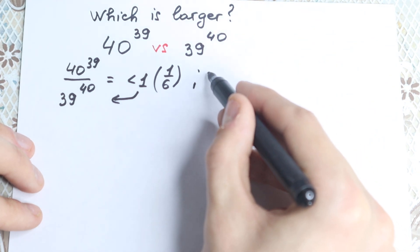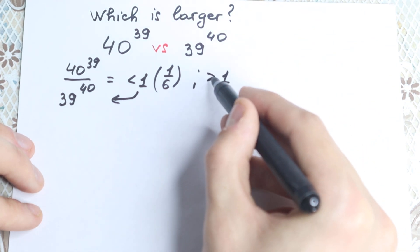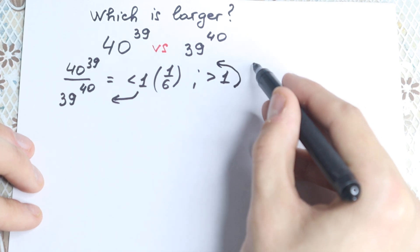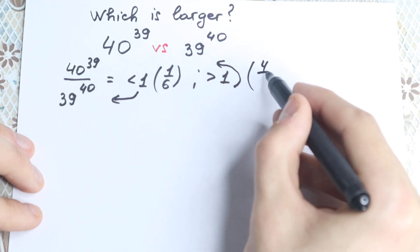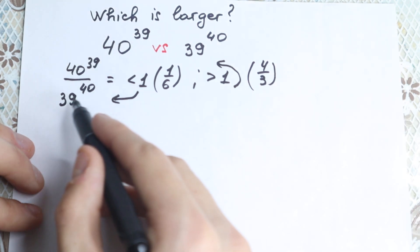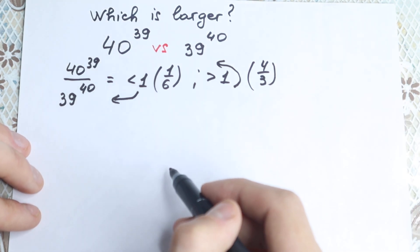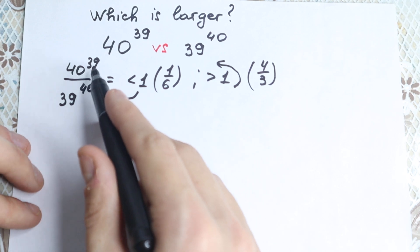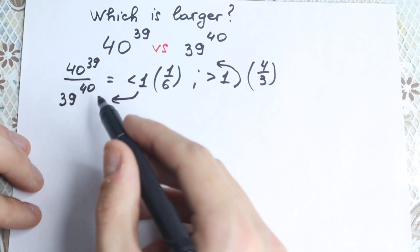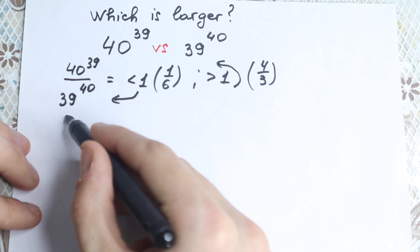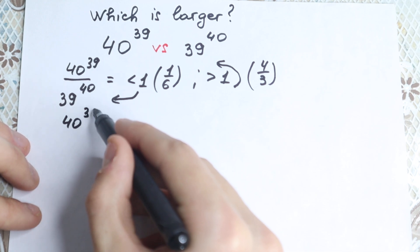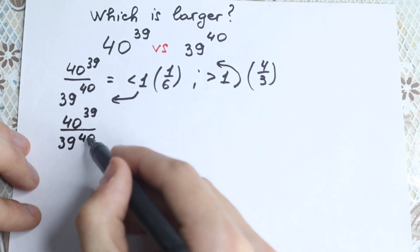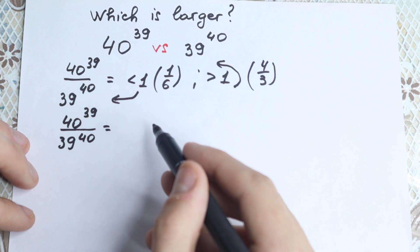But if the answer is greater than 1, then our numerator will be greater. For example, if we have 4 over 3, our numerator is greater. So this is a really important moment. We are going to divide 40 to the power 39 over 39 to the power 40 and determine which case applies. Let's try to compute it step by step.